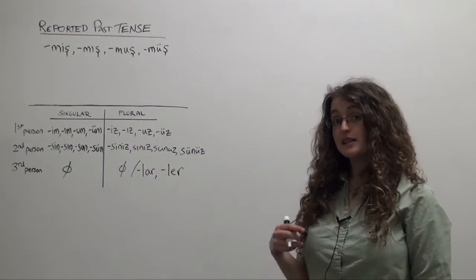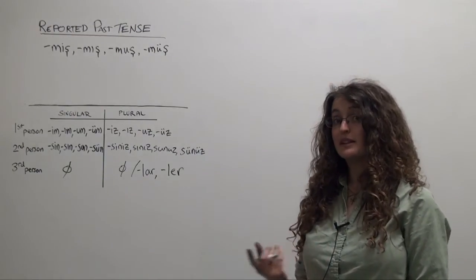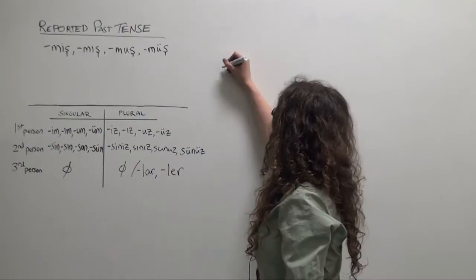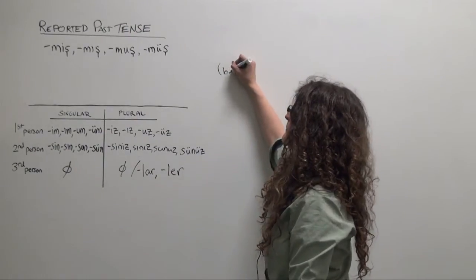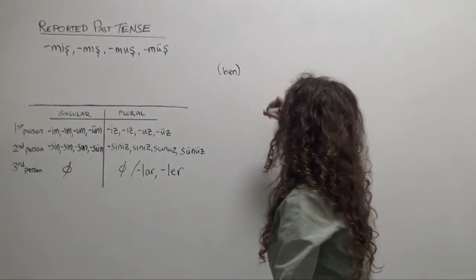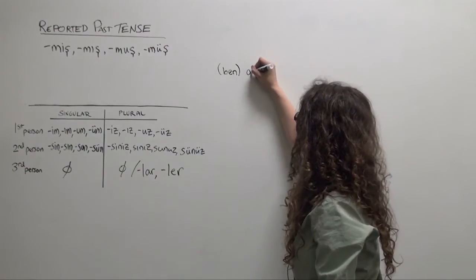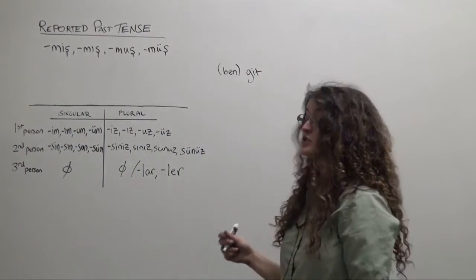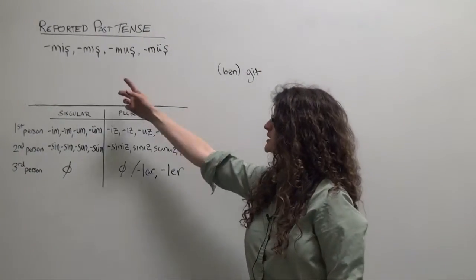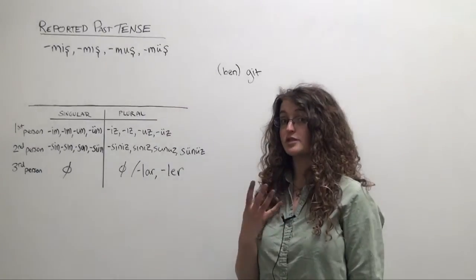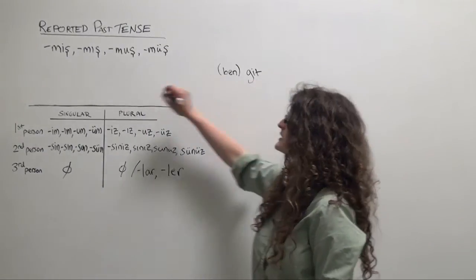We'll use as our example, our first example verb, the verb gitmek, to go. We'll start with ben. Ben git. Now we'll simply choose the appropriate form of the reported past tense suffix according to the rules of four-way vowel harmony. So ben gitmiş.